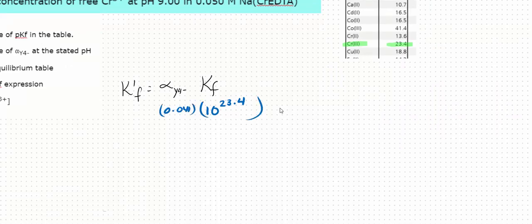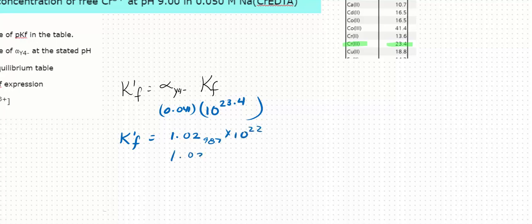Put that into my calculator in order to find the conditional formation constant. And the value that I get is 1.02987 times ten to the 22nd. So I would actually end up reporting 1.03 times ten to the 22nd as my conditional formation constant.